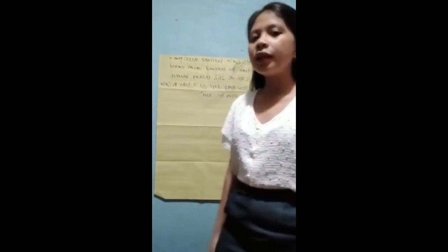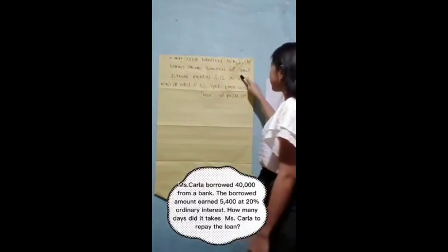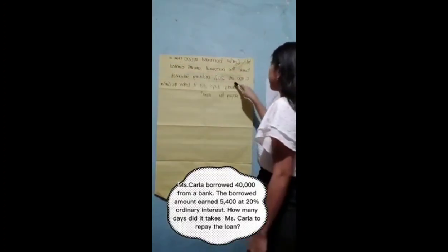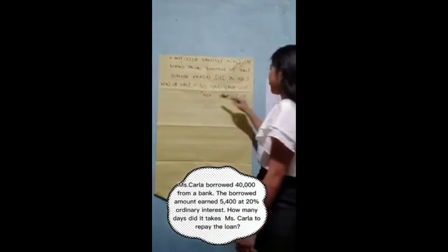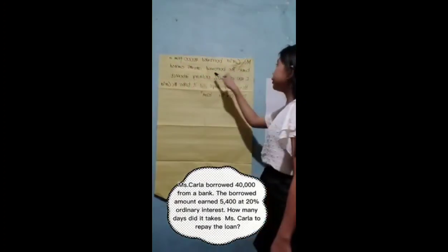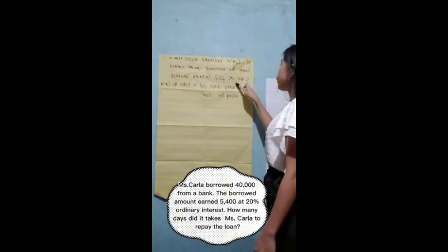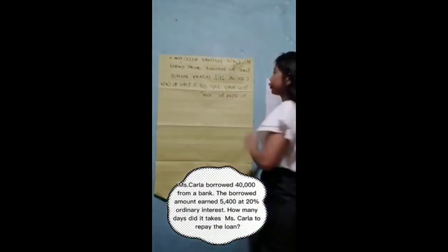How about if time is what we need to find? Mrs. Carla borrowed 40,000 from a bank. The borrowed amount earned 1,400 at 20% ordinary interest. How many days did it take Mrs. Carla to receive the loan? First, identify the given: principal equals 40,000, interest is 5,400, and rate is 20%, which we convert to decimal: 20 divided by 100 equals 0.20.